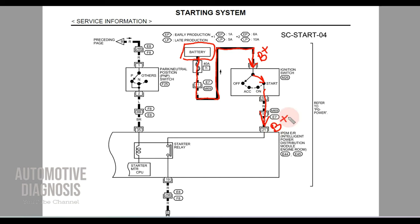When you turn the ignition switch to the start position, you are providing battery positive from here along this wire. This battery positive travels to the engine control module area and goes from pin number 21 on the engine room fuse box — we will find that pin later because it's inside one of these two connectors — all the way toward the starter relay.